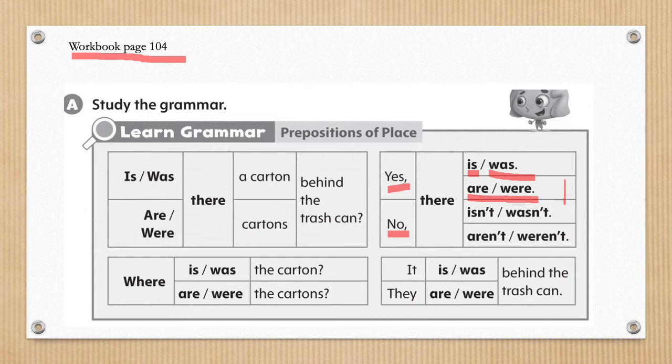Then the negative form could be, obviously, no. So, is there a carton behind the trash? No, there isn't. And for past tense, was there a carton behind the trash? No, there wasn't. Plural: no, there aren't. No, there weren't. Okay students, just remember that plural usually has an S at the end. So look for the noun that has the S to confirm that it is plural.